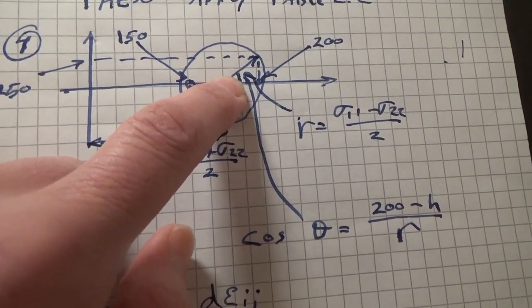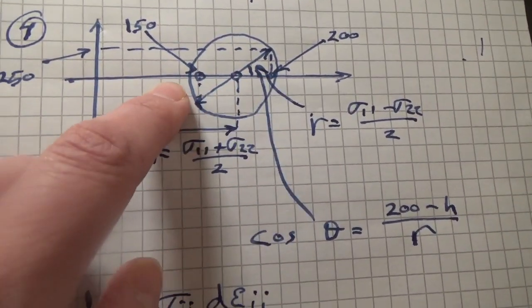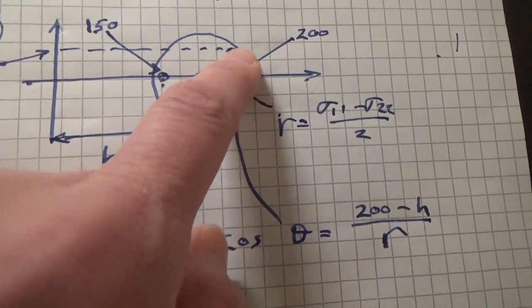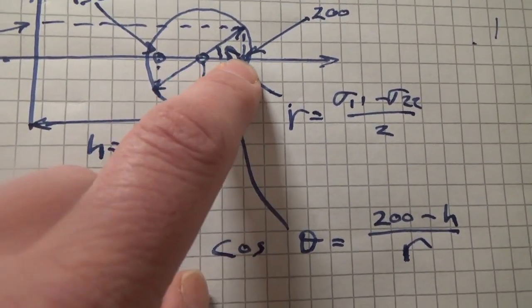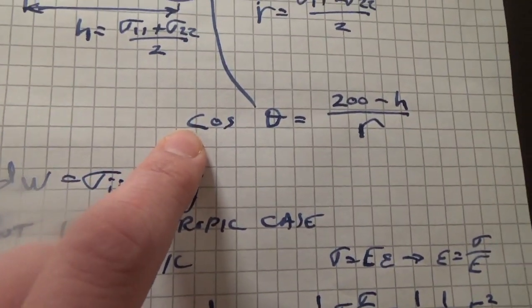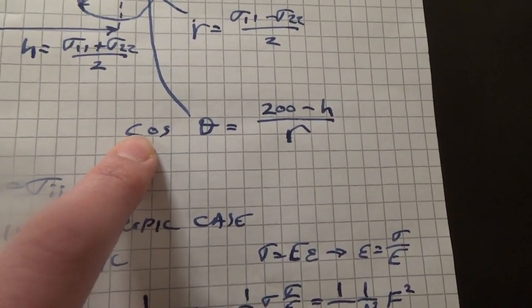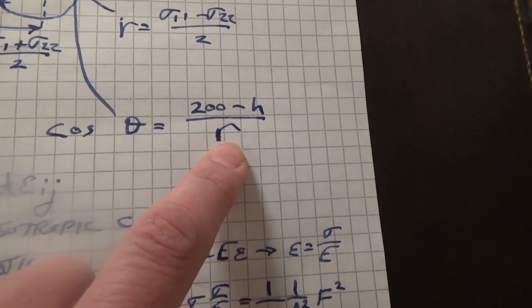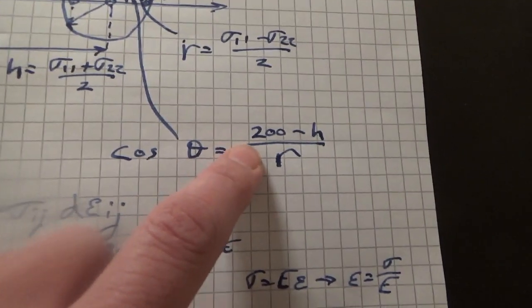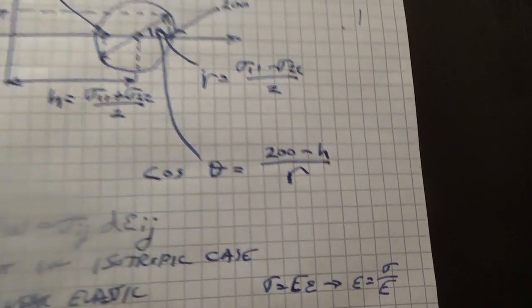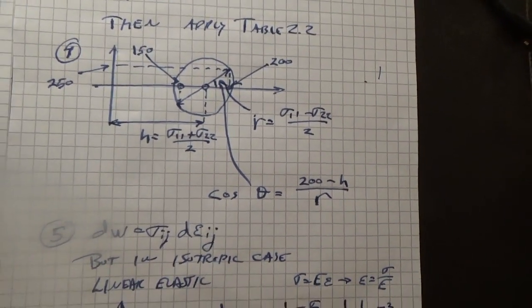Now, the question is, what's that angle? How close are we to the principal axis? Well, we know the radius and we know the distance from h to 200 is 25. Then we know just from trig that cosine of theta is 200 minus h over r. So we can find out the angle by taking the arc cosine of that. And that will give you the Mohr's circle representation.